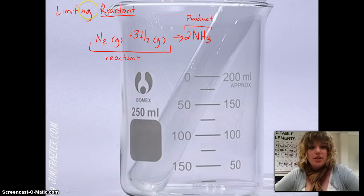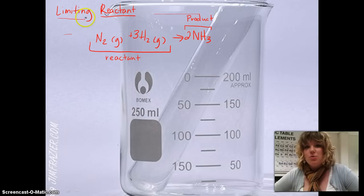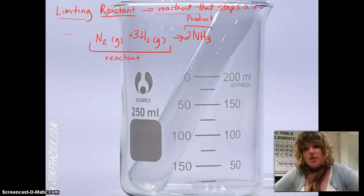So we have to use a calculation to figure out which one of them is actually going to stop the equation. If we were going to write a definition for limiting reactant, just the word limiting, we know that it's going to be something that's going to be stopping the reaction or limiting it from continuing. So we would say our definition would be reactant that stops a reaction.